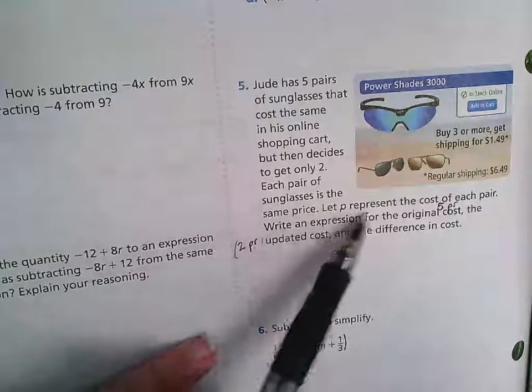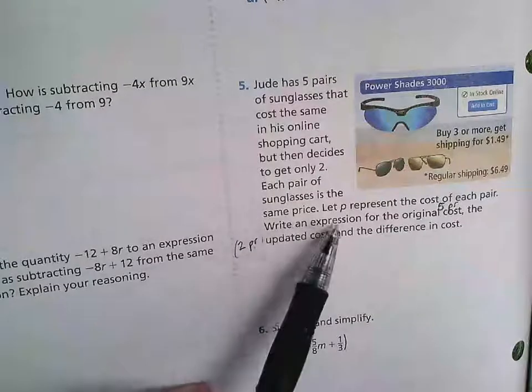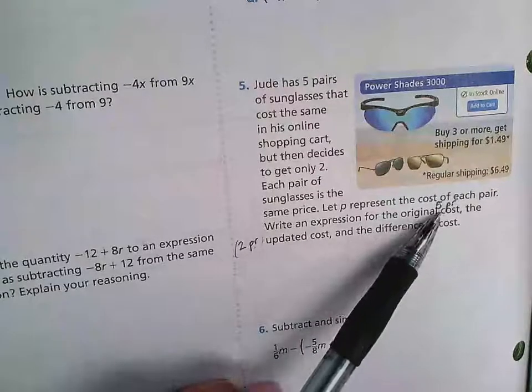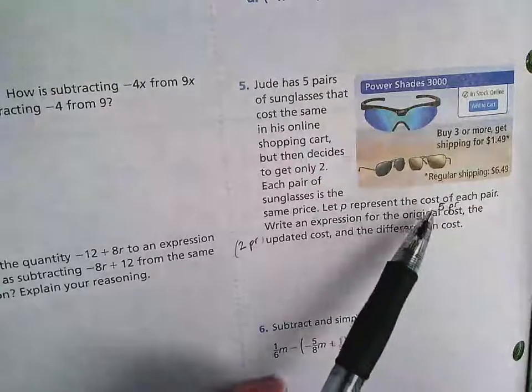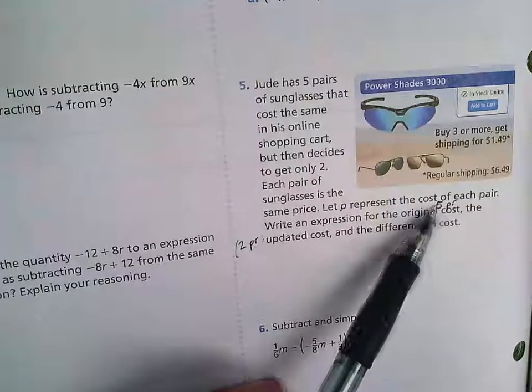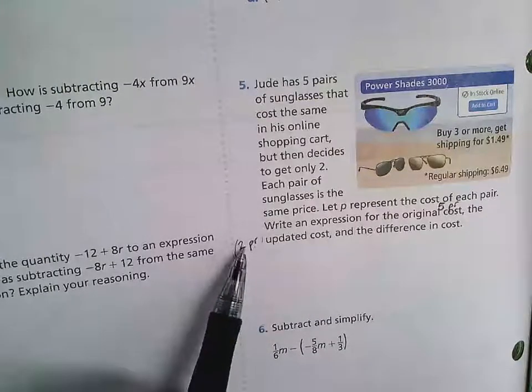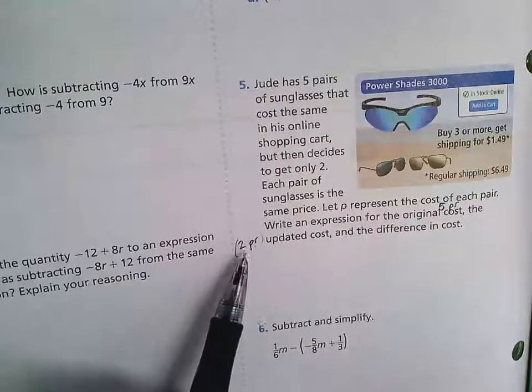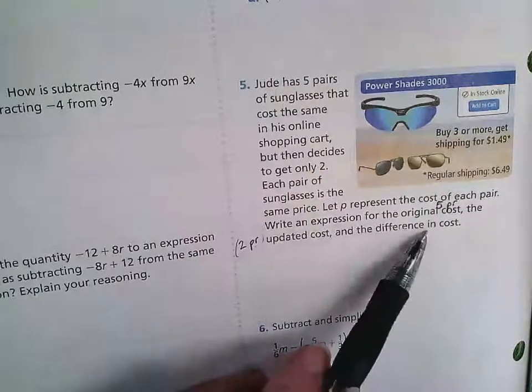Let P represent the cost of each pair. Write an expression for the original cost, which would be the five pairs that he had in his basket, the updated cost where he only decided to get two pairs, and then the difference in cost.